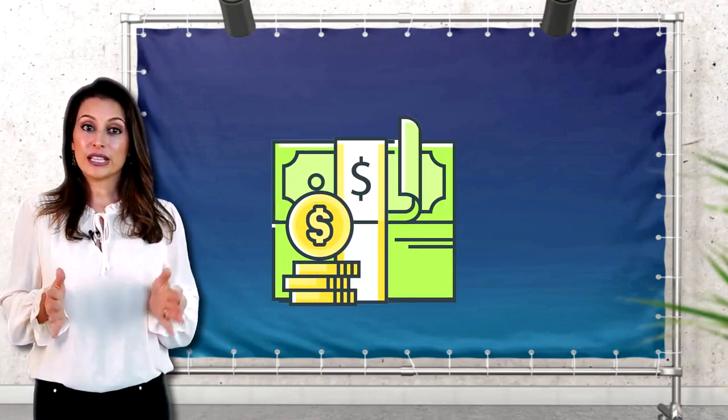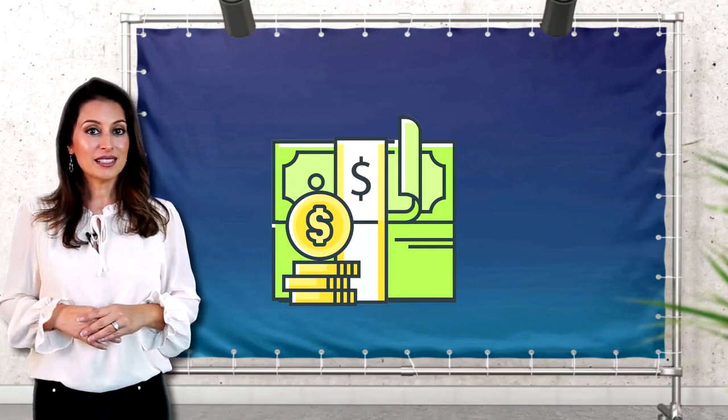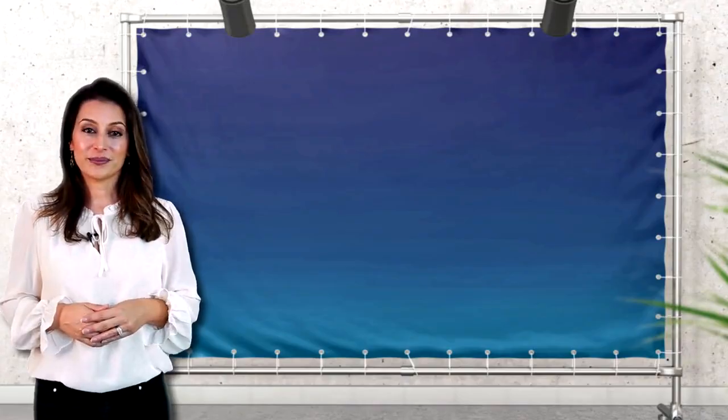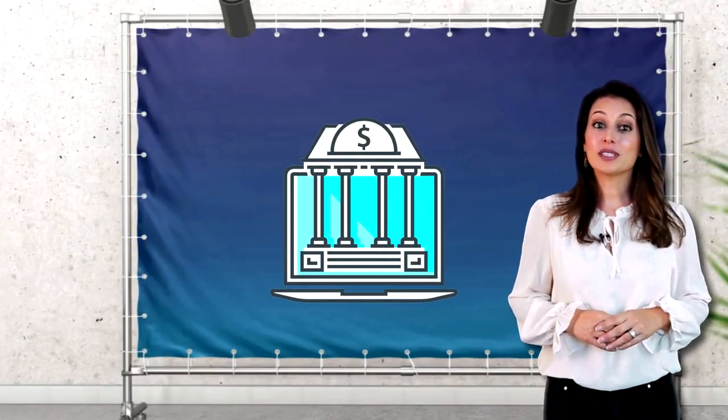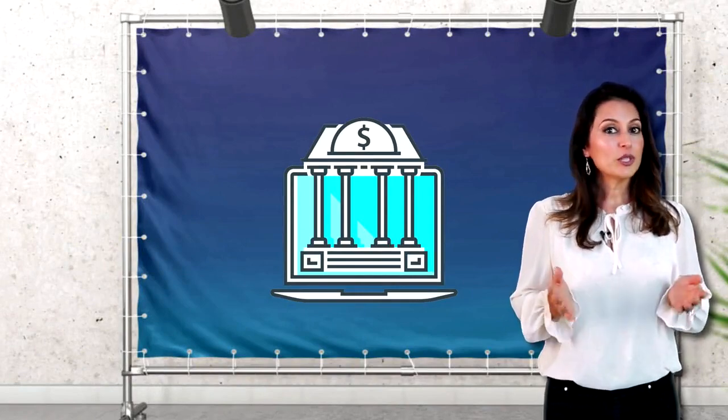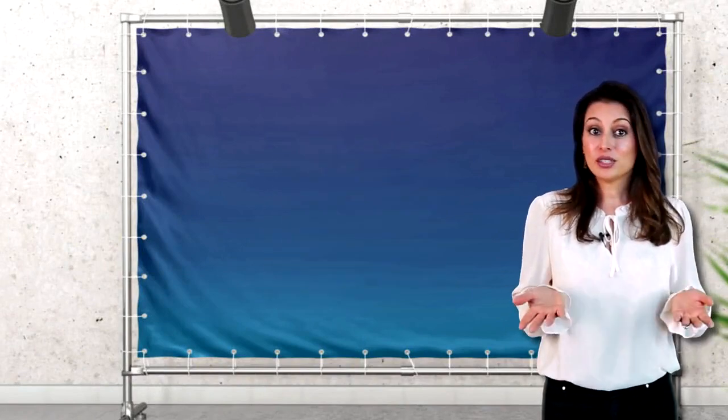Any financial ledger must prevent Alice from spending her $5 more than once. Digital assets are particularly vulnerable to the double spend problem as we generally design them to be easy to copy and distribute.